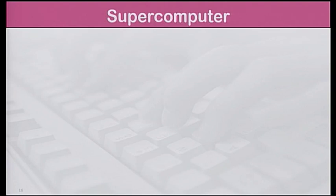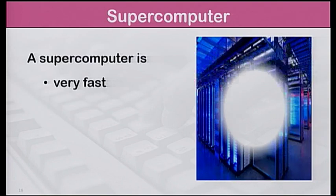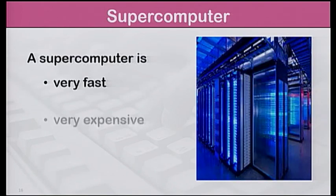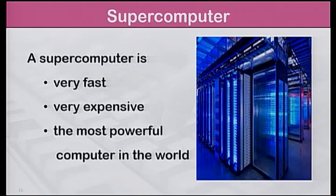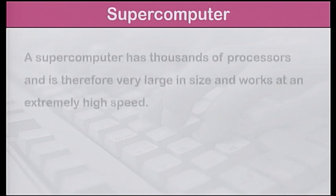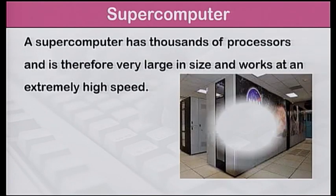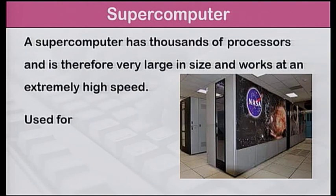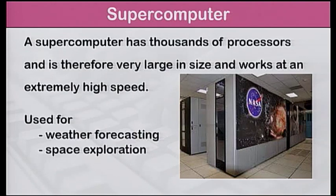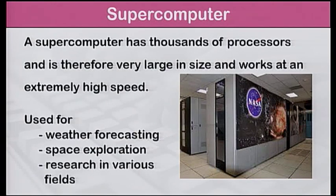The fourth main type of computer is the supercomputer. It is very fast and very expensive — the most powerful computer in the world. A supercomputer has thousands of processors and is therefore very large in size and works at an extremely high speed. It is used for weather forecasting, space exploration and research in various fields.